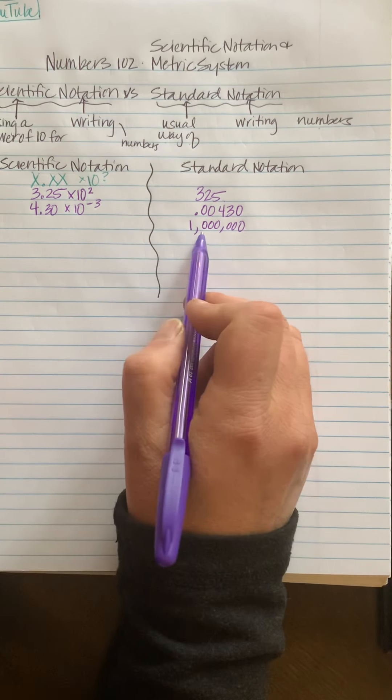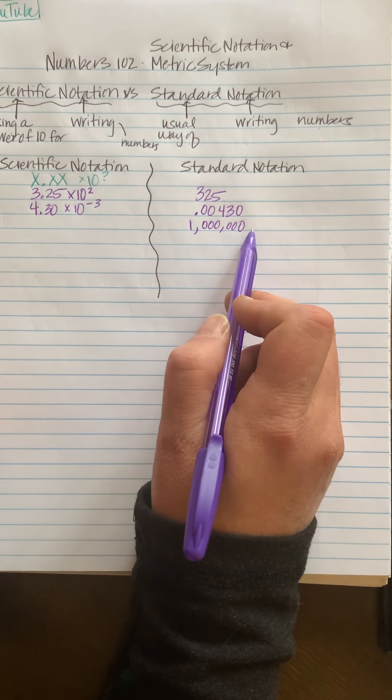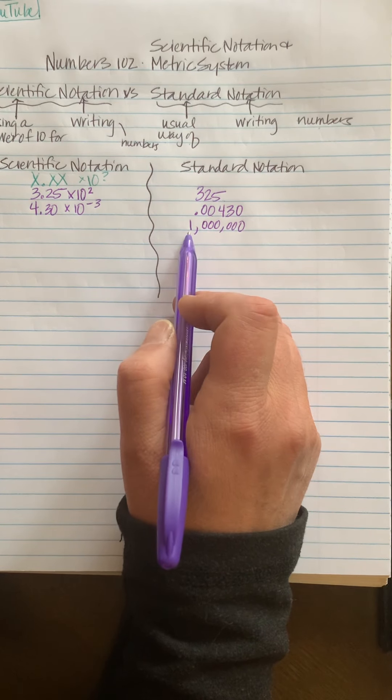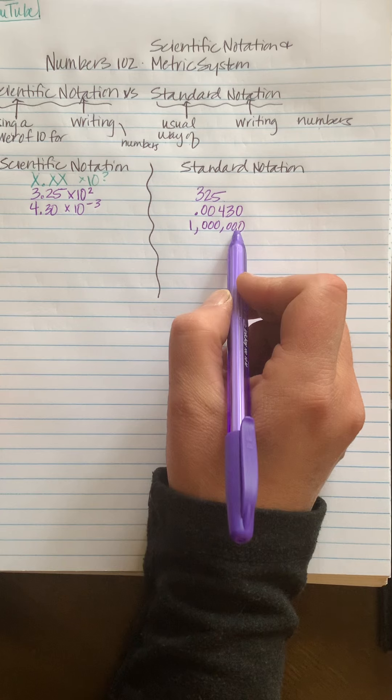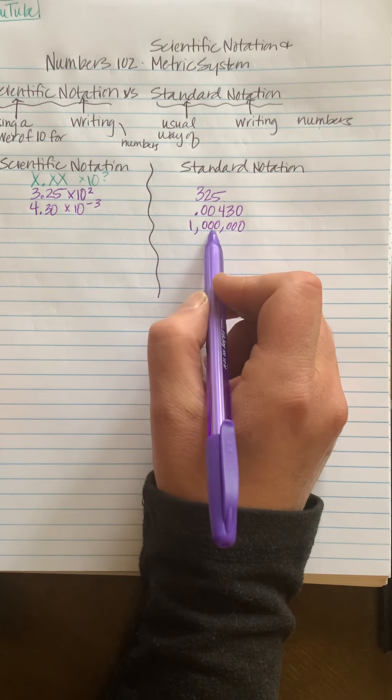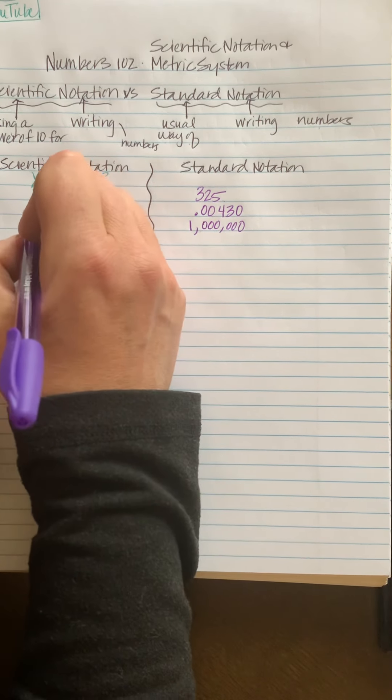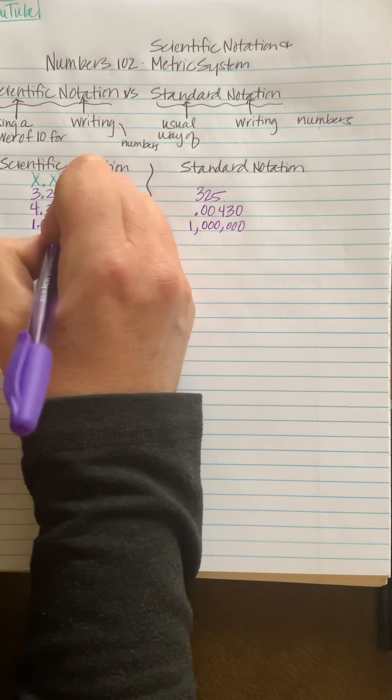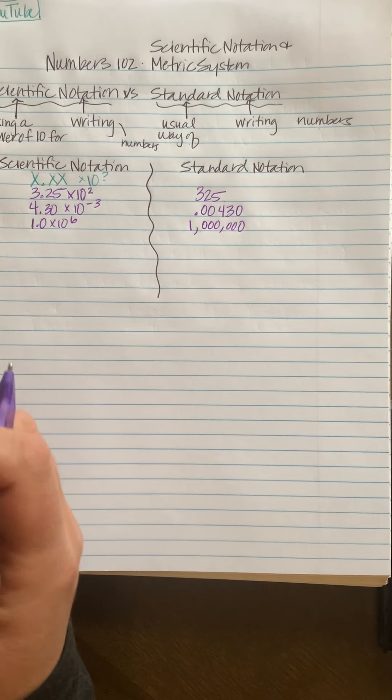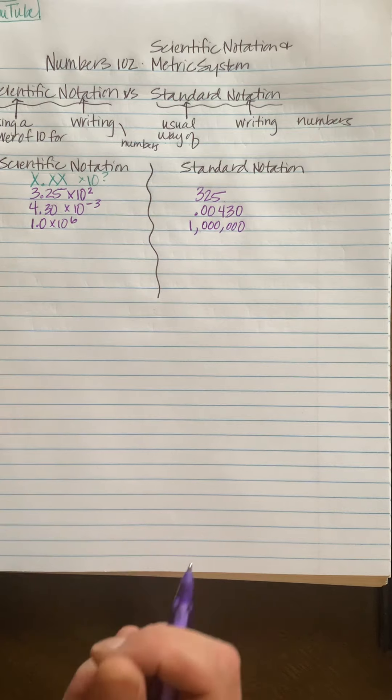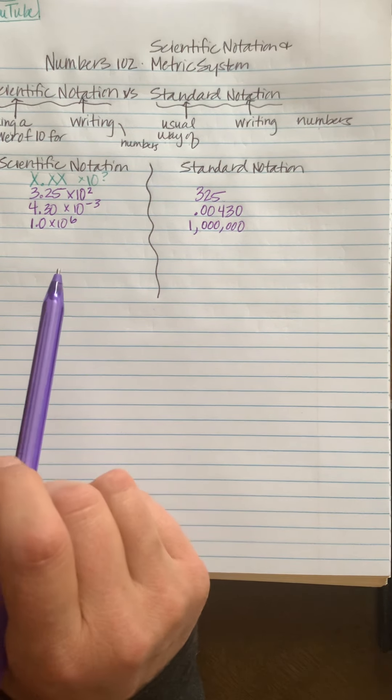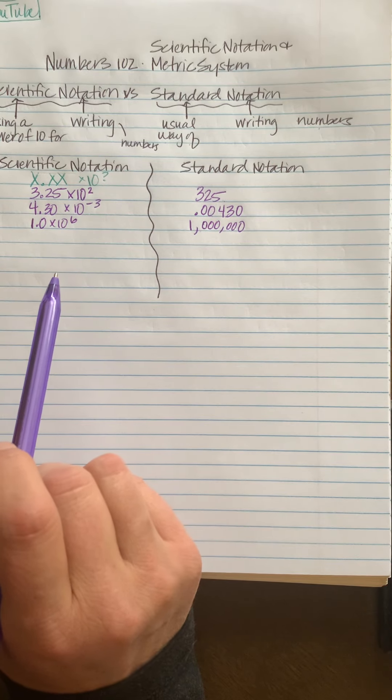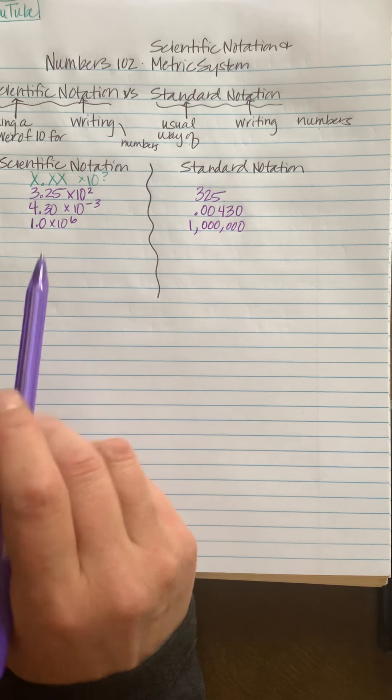A really big number like, we'll say 1 million in standard notation, we have six zeros and a one. And in scientific notation we would have to move one, two, three, four, five, six spots and we get 1.0 times 10 to the sixth.